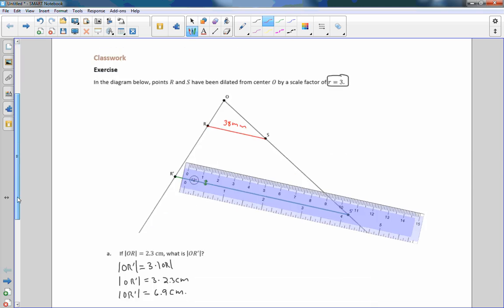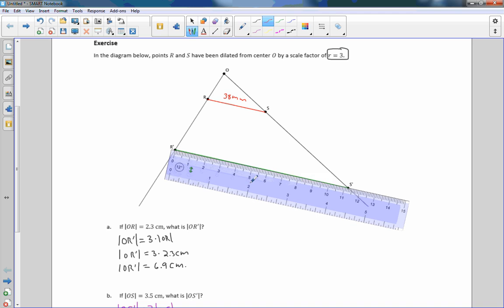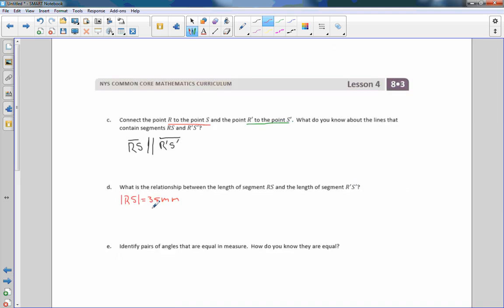And then I'm going to go back, and I'm going to measure R prime S prime. And that is 110, 11, 12, 112 millimeters. So the length of R prime S prime is 112 millimeters.